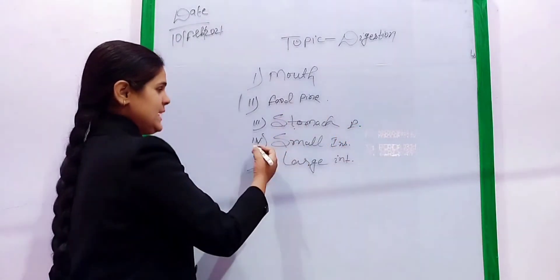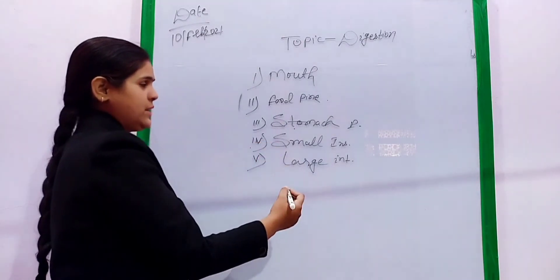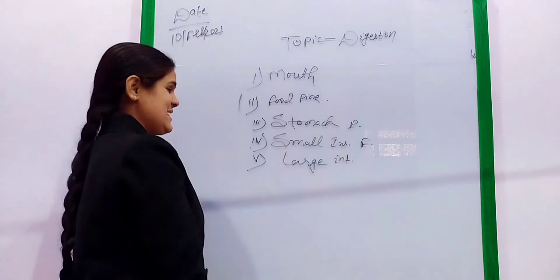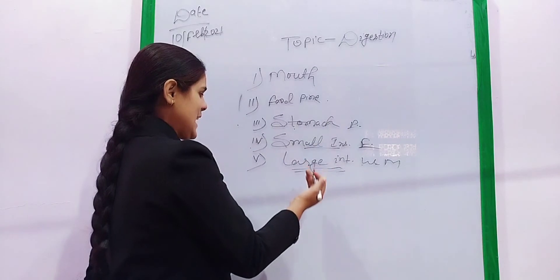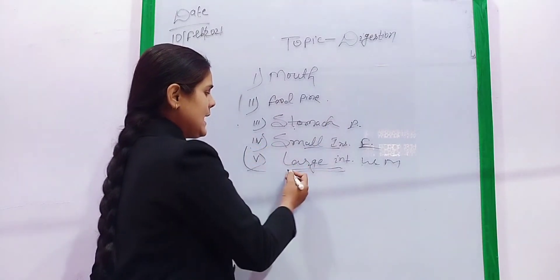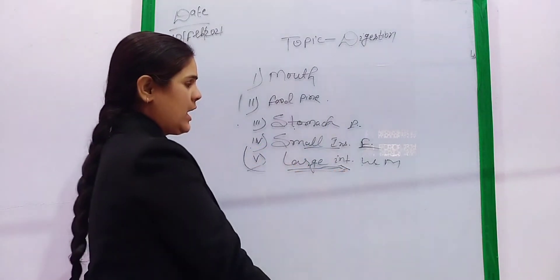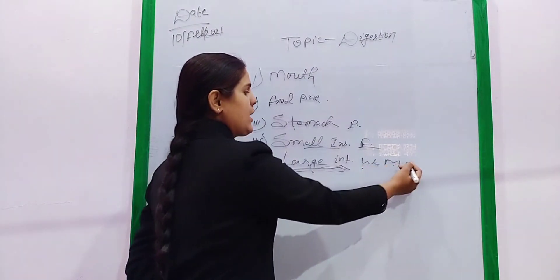Then food comes into the small intestine where fat is digested. After the small intestine, food comes into the large intestine where water and minerals are absorbed.